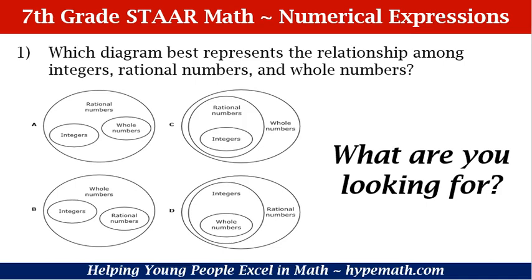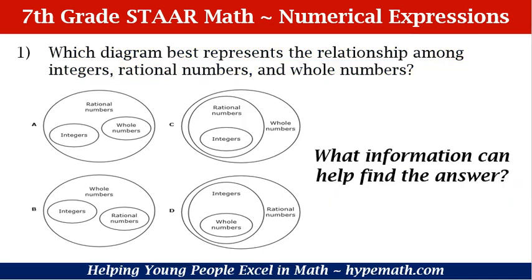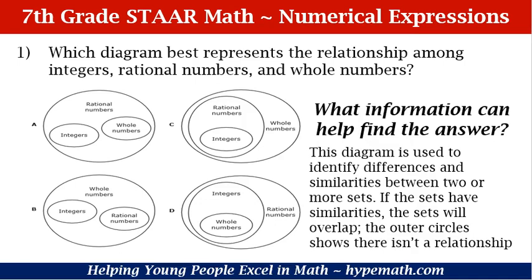Our first question we're going to ask ourselves is: what are we looking for? We are looking for the diagram that best represents the relationship between integers, rational numbers, and whole numbers. This diagram is used to identify differences and similarities between two or more sets. If the sets have similarities, they will overlap. The outer circles show that there isn't a relationship. In choice A, both integers and whole numbers are rational numbers, but integers and whole numbers have differences — they do not overlap, they do not connect.